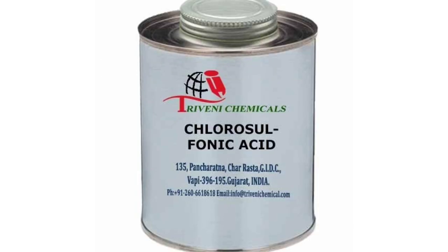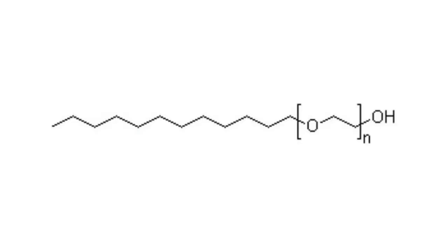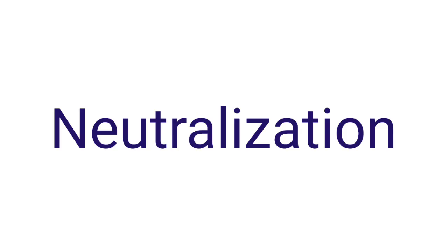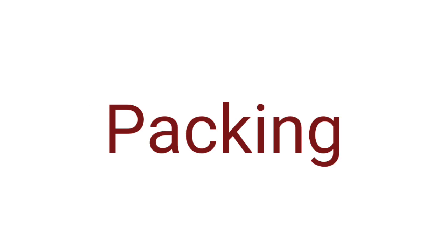The production is from chlorosulfonic acid, lauryl ethoxylate, and sodium hydroxide. The process central analysis comprises four major sections: number one, sulfation; number two, neutralization; number three, scrubbing; and number four, packing.